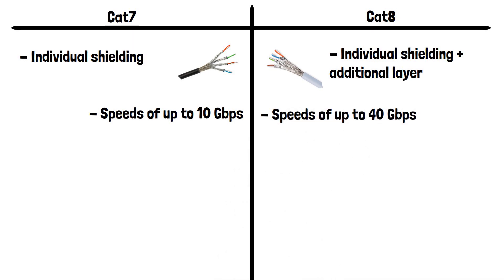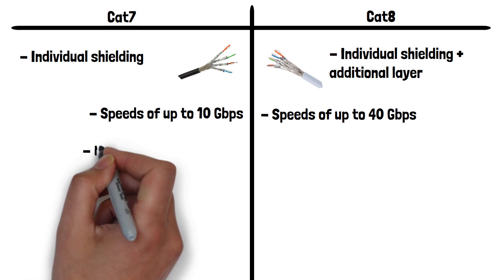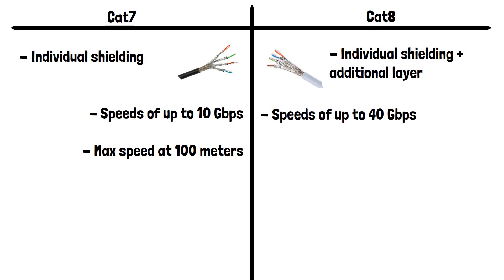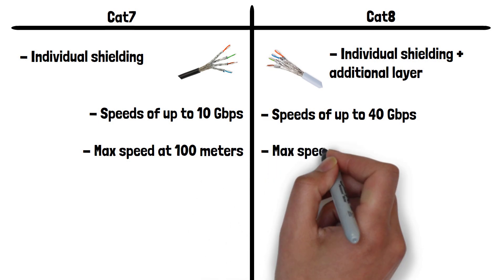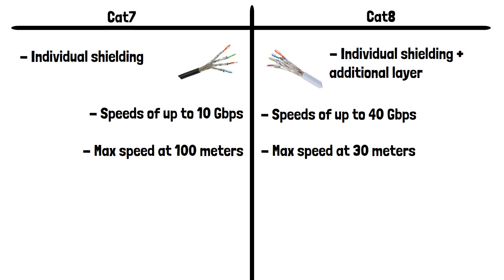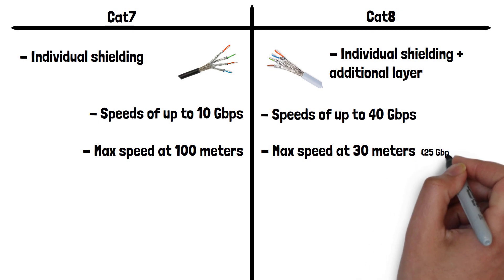Another difference to mention is the range at which they can transfer data at their maximum speed. CAT7 cables can transfer at their max speed of 10 gigabits per second up to a cable length of around 100 meters. CAT8 on the other hand can be up to 30 meters long when transmitting at their max speed of 40 gigabits per second. It's worth mentioning that CAT8 can still transmit data at 25 gigabits per second up to 100 meters.